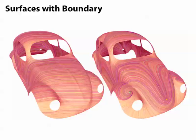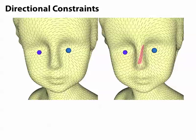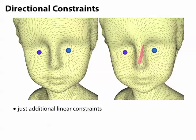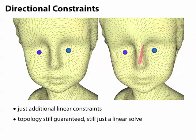We can also handle surfaces with boundary and directional constraints. There are more details about this stuff in the paper. But basically the story is that we just have to add additional linear constraints to our system. And we still get the same types of guarantees, we still just have to solve a single linear system.